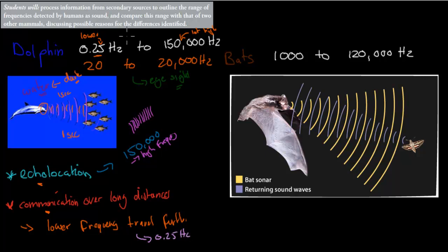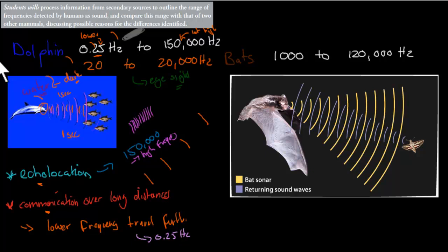If there's another dolphin kilometers away, it's going to use a low frequency sound wave to communicate — low frequency means the gaps between waves are quite far apart, but it also means the sound travels further. So it uses low frequency sound waves to communicate with other members of the dolphin species. So there are two possible reasons why the dolphin's range is different: a higher upper limit for echolocation to find prey, and a lower limit than ours because lower frequencies travel further and allow long-distance communication.